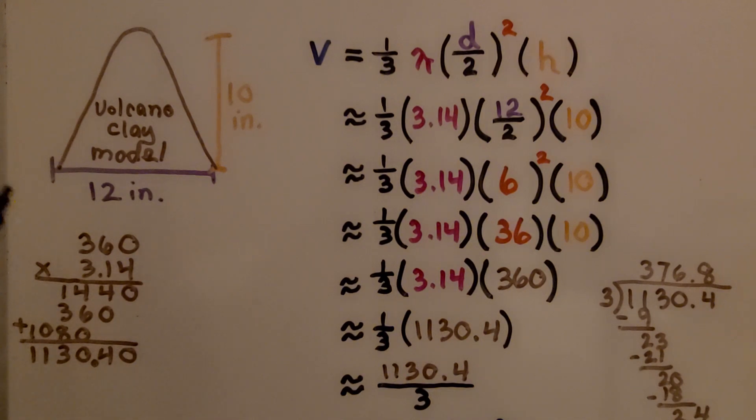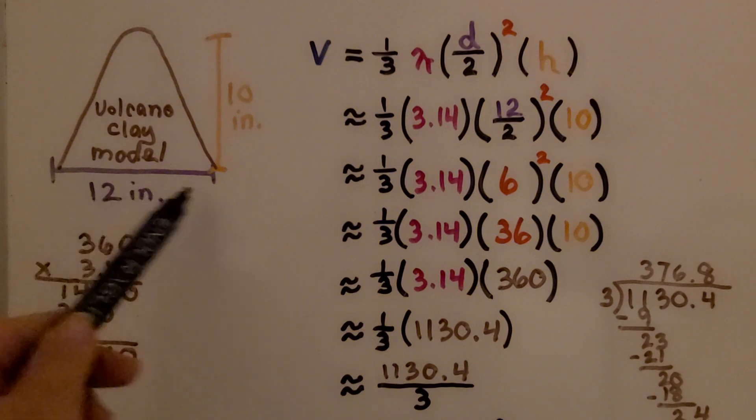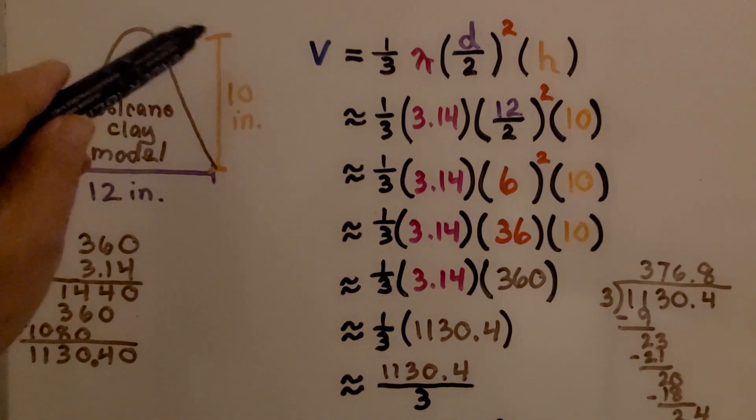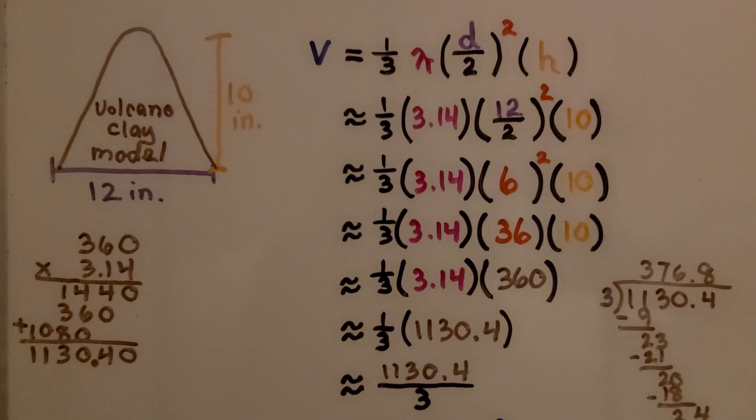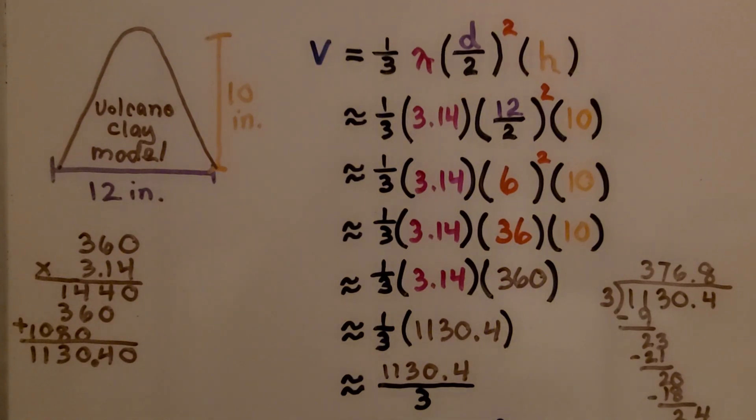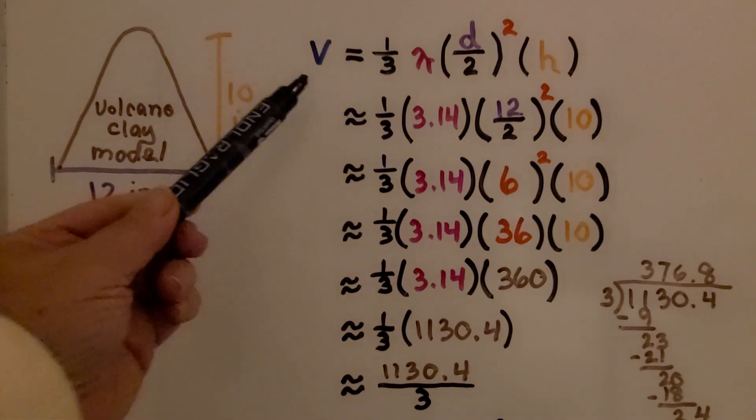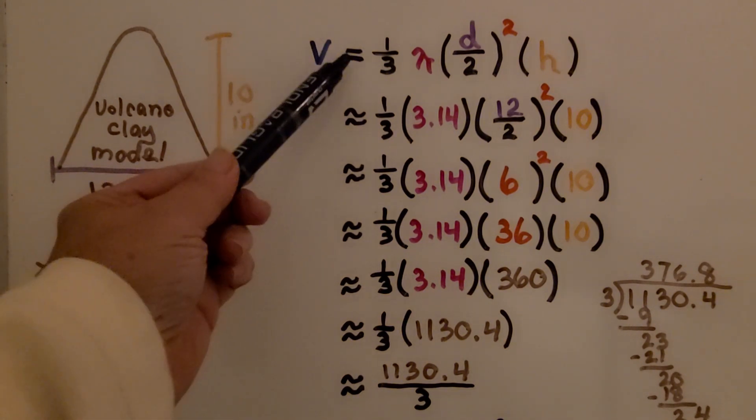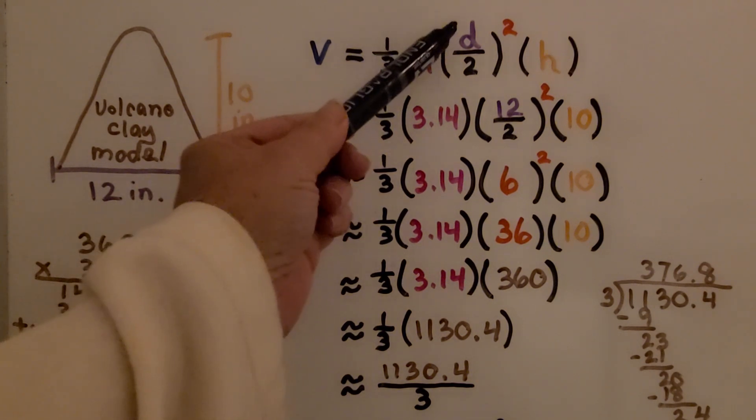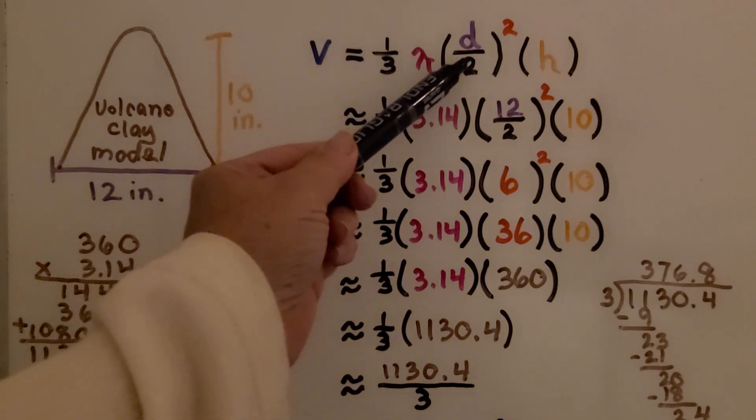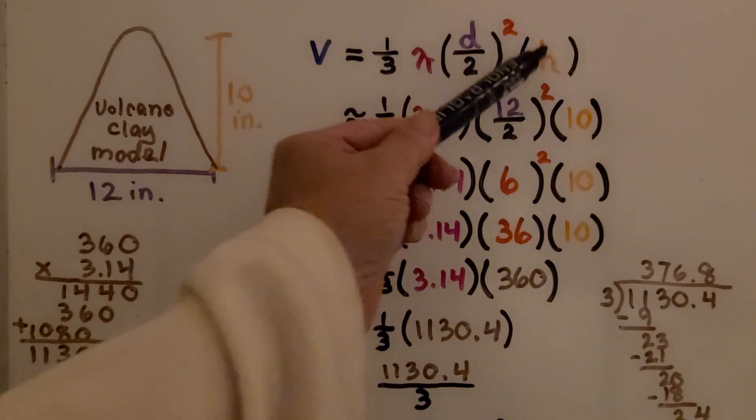So here's Sam's clay model of his volcano. We were told that the diameter was 12 inches and that the height was 10 inches, and we need to find the volume to the nearest tenth and use 3.14 for pi, not the pi symbol on a calculator. Since we're given the diameter and not the radius, we're going to use the formula V equals one-third pi multiplied by the diameter divided by 2 squared times the height.